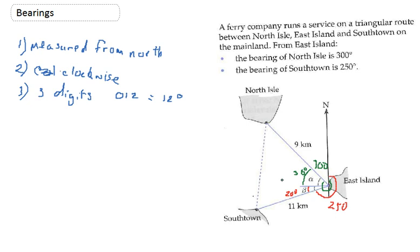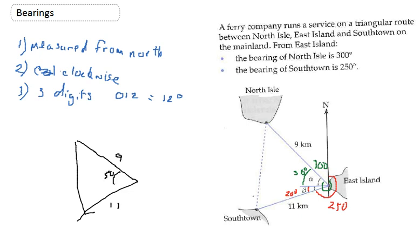I'm going to draw a new triangle. I've got that side, I've got that side, and I want to work out this side. I've been told that side is 11, that side is 9, and the angle is 50 degrees. That is clearly an angle surrounded by two sides, so that's the cosine rule.